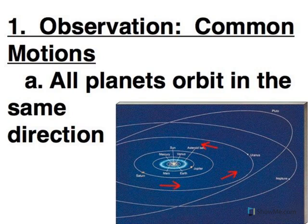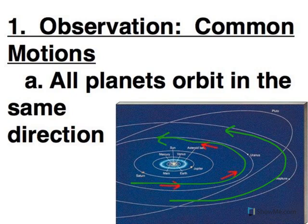If we look down on the solar system from that point of view, all of the planets orbit in a counterclockwise direction. Mercury, Venus, Earth, Mars, Jupiter, Saturn, Uranus, Neptune, even Pluto, even though we don't consider it a planet, all of them orbit in the same direction.